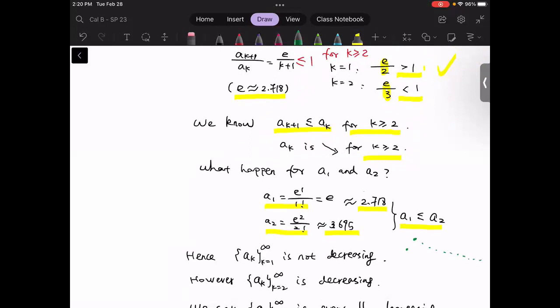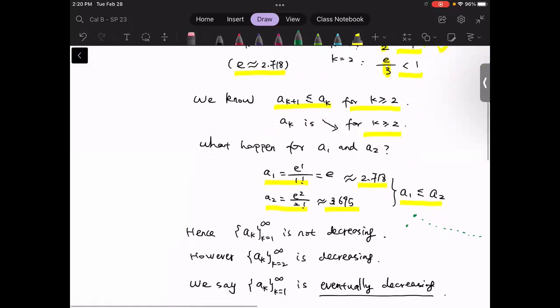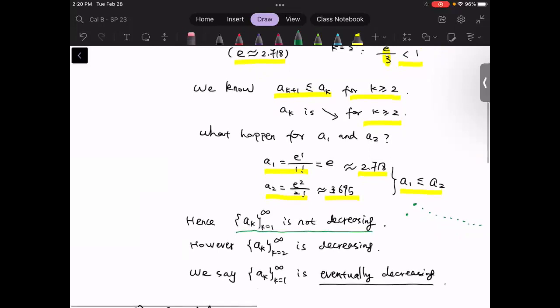Now, let's look at this pattern. Clearly, this is not going to be a monotone sequence globally. So we can say the a_k is not decreasing, it's not monotone. However, we have some partial monotonicity.